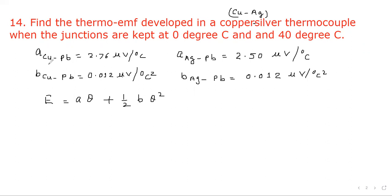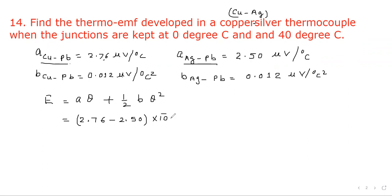For the copper-silver thermocouple, we consider copper with respect to lead and silver with respect to lead. The value of A will be the difference of the two: 2.769 into 10 to the power minus 6 multiplied by θ, where θ is 40 degrees. Plus one-half B, which is the difference of the two B values — this term becomes zero.